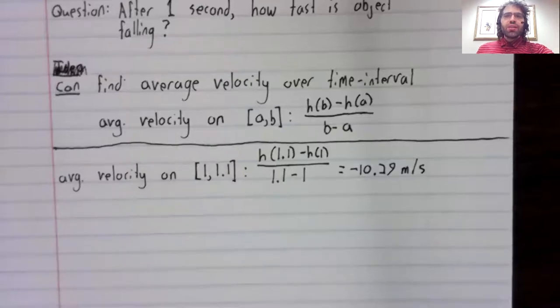How could we make this approximation better? Well, if not a lot of acceleration is happening over the course of 0.1 seconds, even less acceleration is happening over the course of 0.01 seconds.